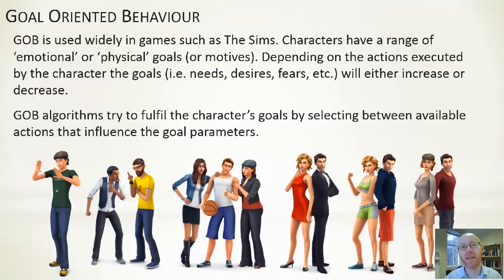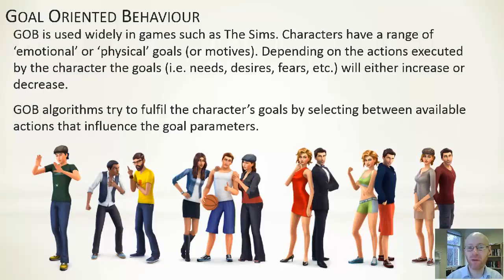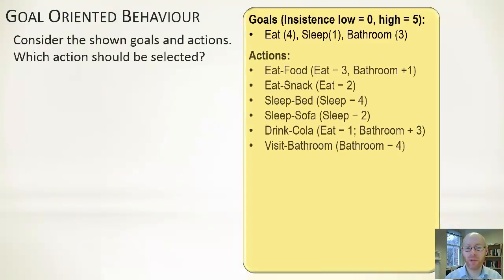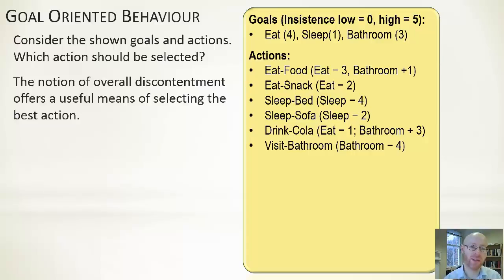In these types of games, there's a range of different activities that are available, and we're faced with the question of, at this point in time, for the character, based on what it wants, what is the right action for it to take? GOB algorithms try to fulfill the character's goal by selecting between available actions that influence the goal parameters. So we've got a number of goals and a number of actions. The goals, we have only three. We want to feel full, we don't want to feel hungry, we want to feel well-slept, and we don't want to feel we have to go to the bathroom. So we've got insistence values associated with these. Zero means, I'm happy. Five means, I really do want to do this.